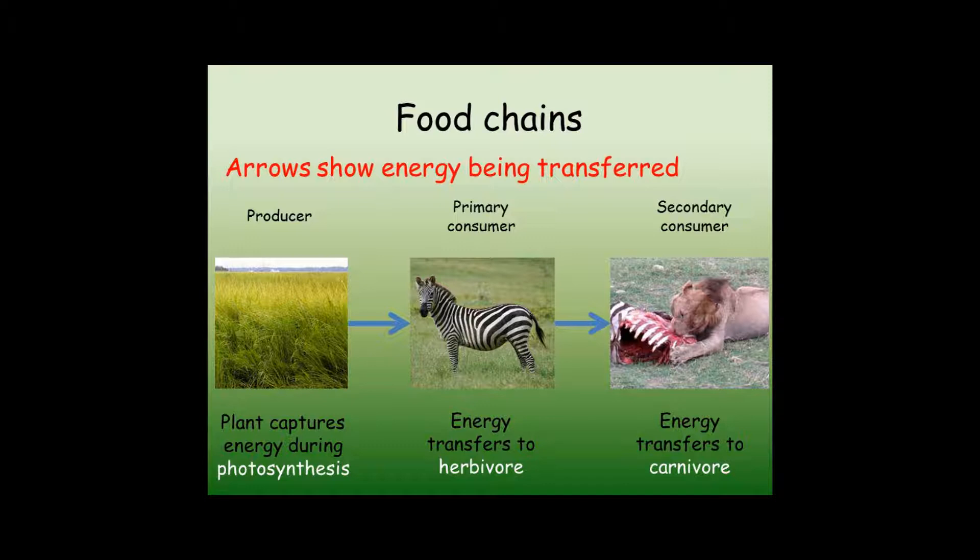Herbivores are animals that eat plants. These animals are also known as primary consumers. Carnivores are animals that eat other animals. These are also known as secondary consumers, and so the food chain continues.